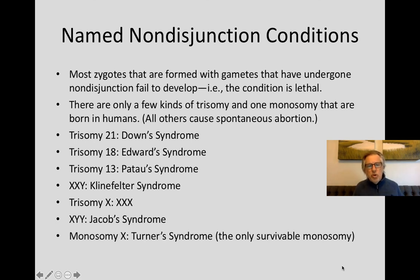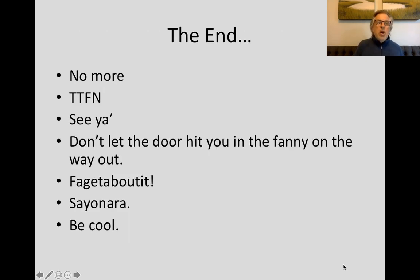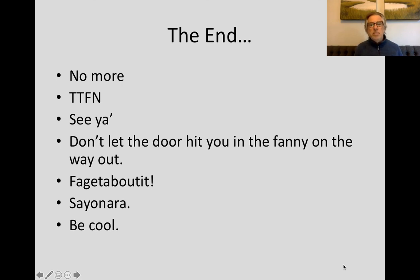We will spend more time looking at these conditions in a later class. What I hope you have learned today is where meiosis occurs, what its goal is, how sexual reproduction increases variation in offspring and therefore seems to have been selected because it increases the chance offspring will survive in a changing environment, and we've covered non-disjunction and the medical conditions that can occur when a non-disjoined gamete forms a zygote. Until next time, go outside, look at nature, ask biological questions, and bring them back to class.